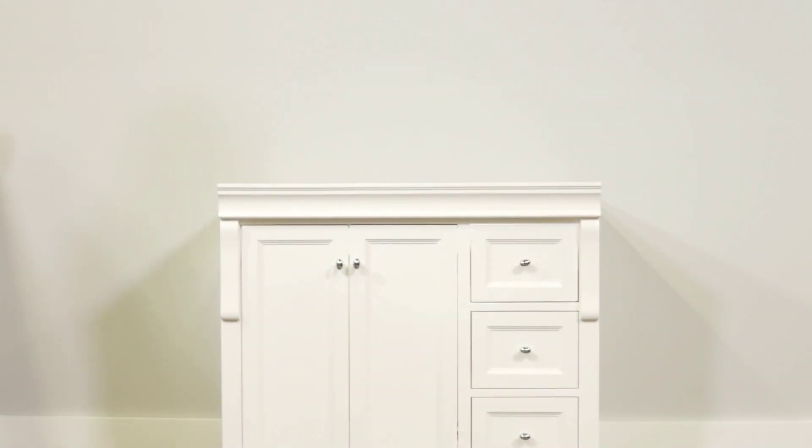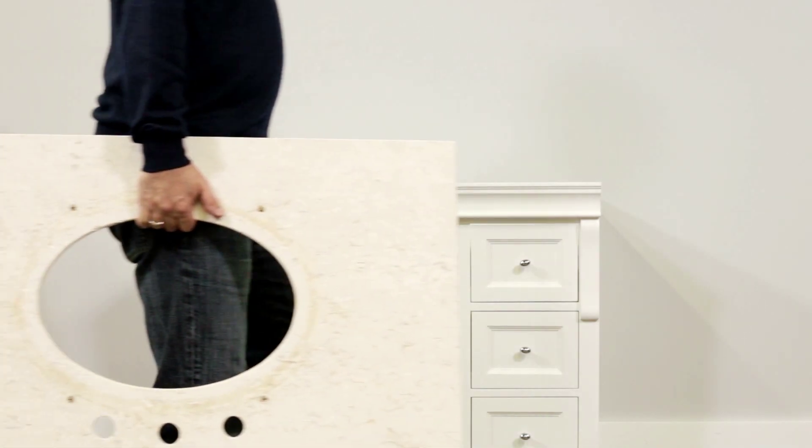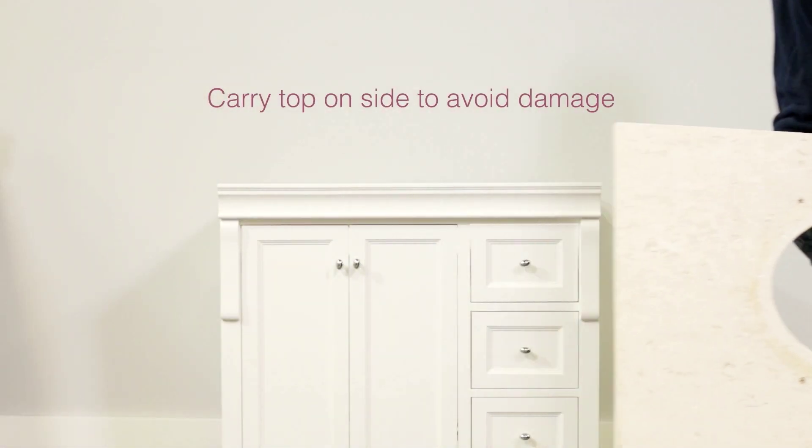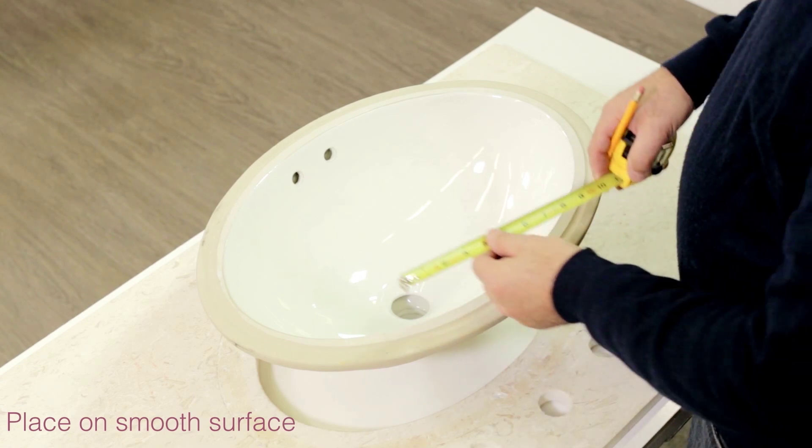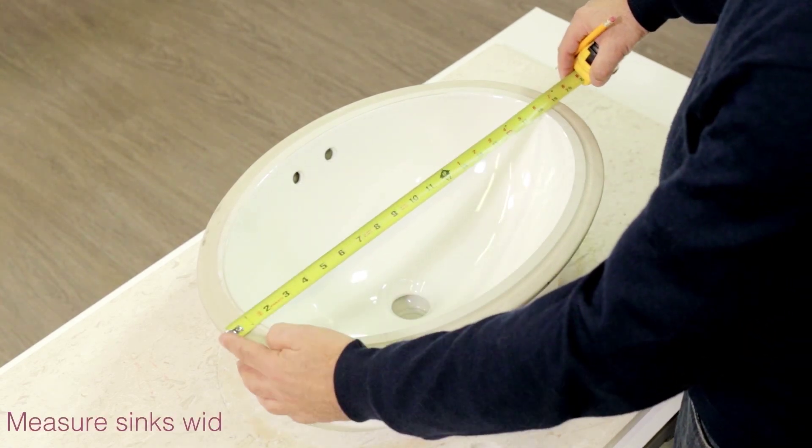Now we can start by attaching the vitreous china undermount sink to the stone top. Carry the vanity top on its side to avoid breaking or cracking. Place the vanity top upside down on a smooth surface and measure the sink's width and depth.